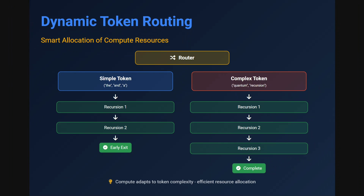Dynamic token routing is the core of the paper. For a simple token like 'a' or 'the', it might go through just a couple of recursions and then an early exit, while a complex token might recurse three times more than a simple token before completing. Depending on the complexity of the token, the blocks are repeated, and how many times recursion should happen is decided by the router neural network.